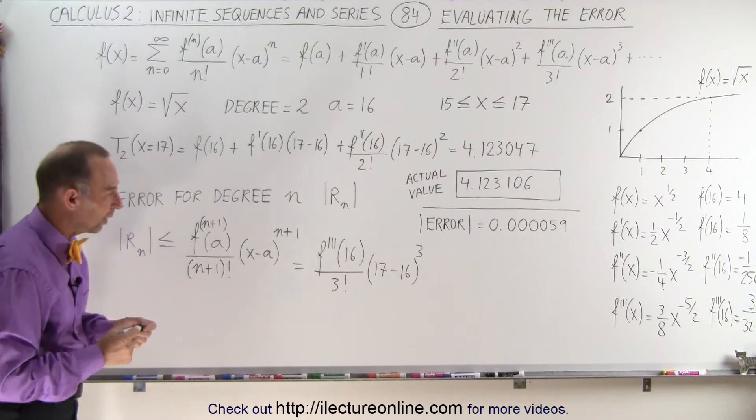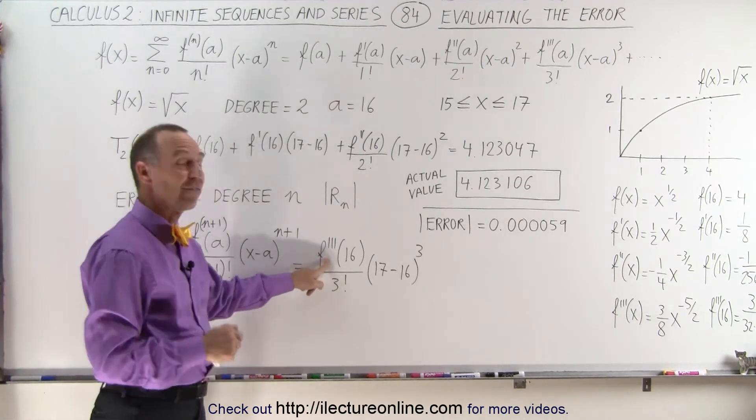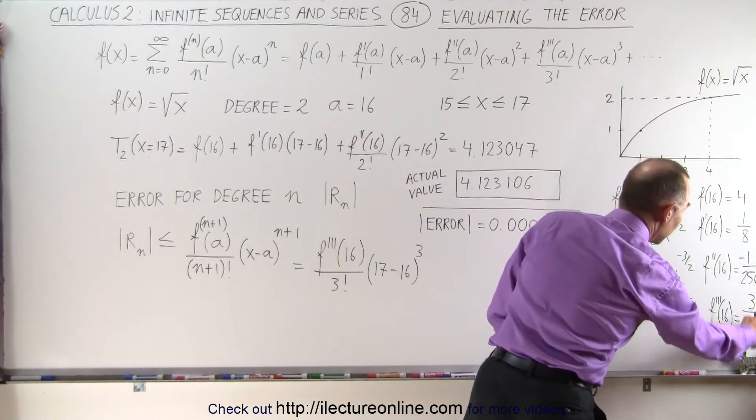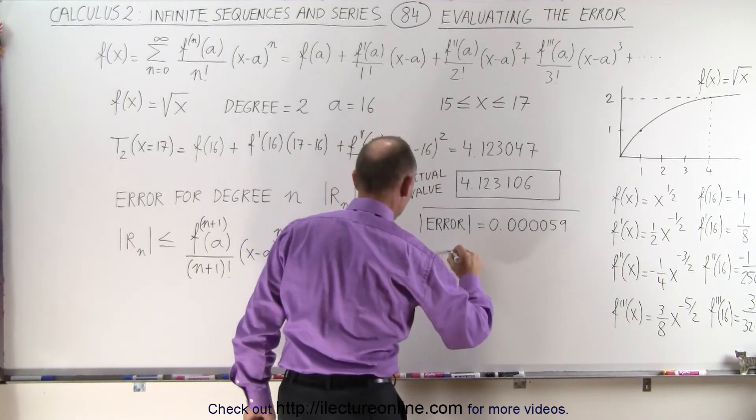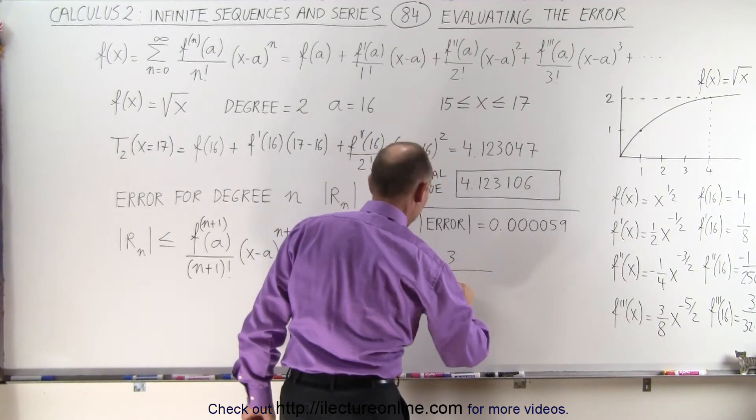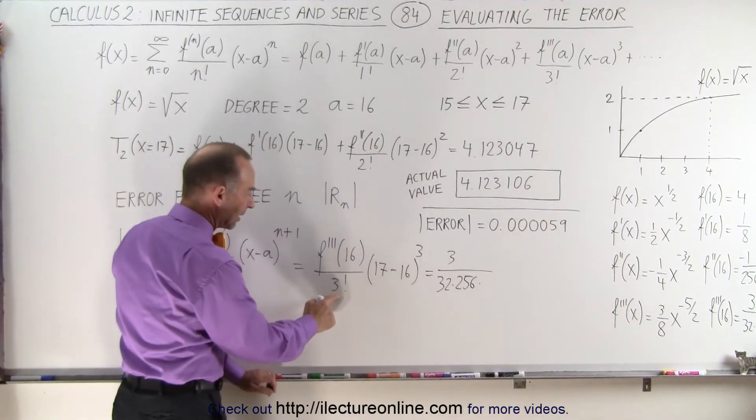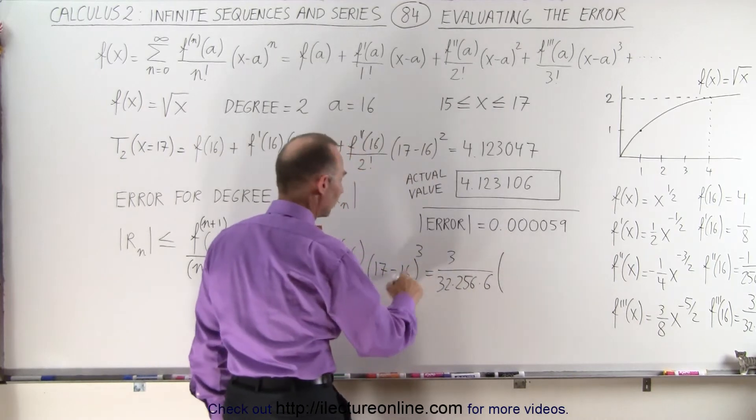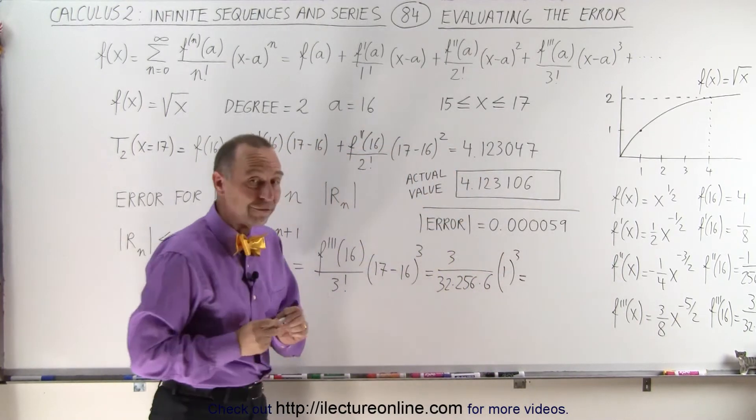It doesn't matter, 17 minus 16 is 1, 1 cubed is still 1. So for our convenience, we've already evaluated f triple prime of 16, so that was 3 divided by 32 times 256, so this is 3 divided by 32 times 256, and we have to multiply that here times 3 factorial, which is 6, and here we have 1 cubed, of course, that's still 1, and let's see what we have for an error.